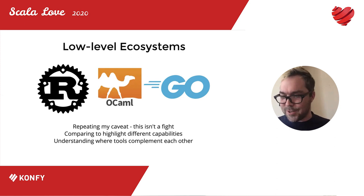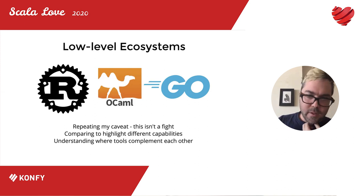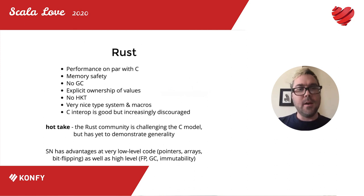Now we've talked about both Scala Native's high-level and low-level capabilities, so let's talk about some other players in this low-level ecosystem: Rust, Go, and OCaml. Again, this isn't a fight — I like all of these, I think they're all useful, and it's about understanding where they complement each other based on their differences, not saying one is better than the other.